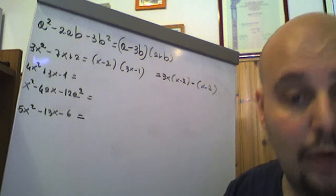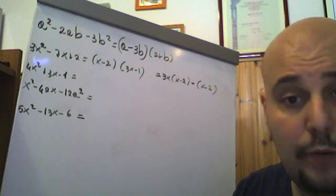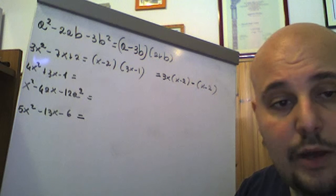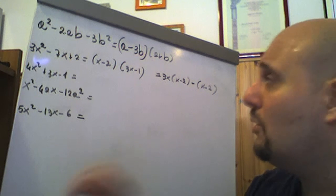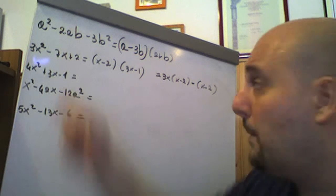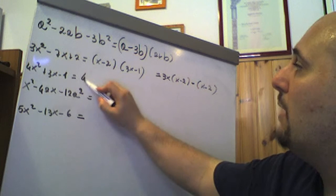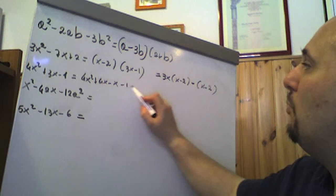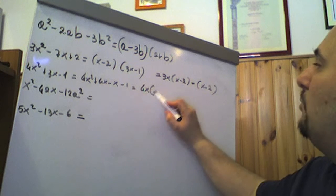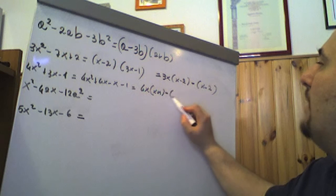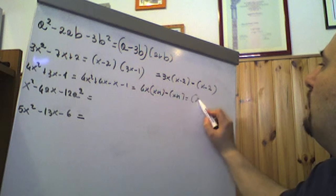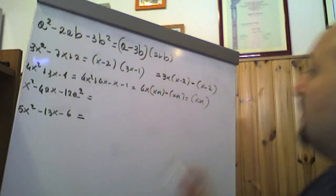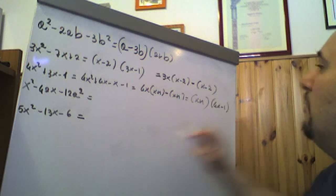4x² + 3x − 1: anche questo non è un trinomio notevole. Moltiplichiamo il termine noto −1 per il coefficiente 4: fa −4. Notiamo che 4 + (−1) = 3. Scriviamo 4x² + 4x − x − 1, raccogliamo 4x: 4x(x + 1), poi −1(x + 1). Raccogliendo (x + 1): 4x² + 3x − 1 = (x + 1)(4x − 1).